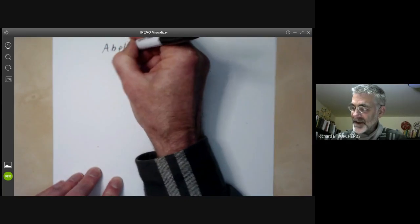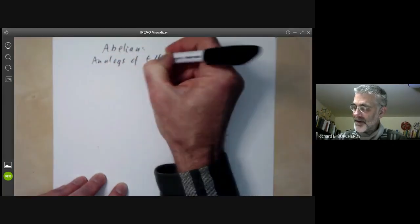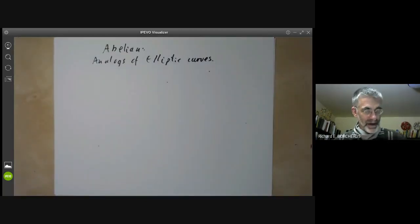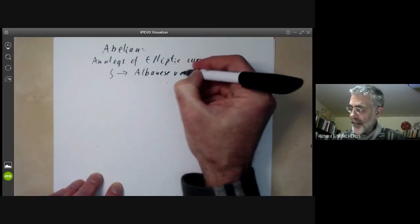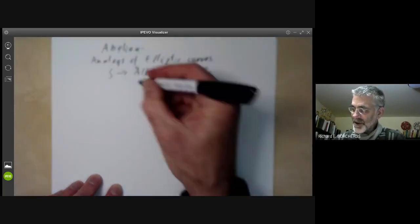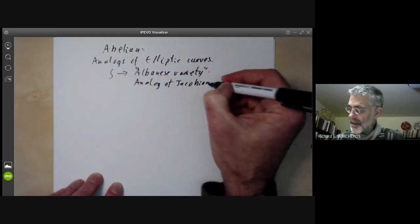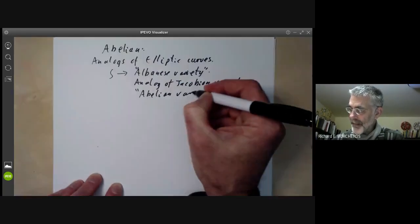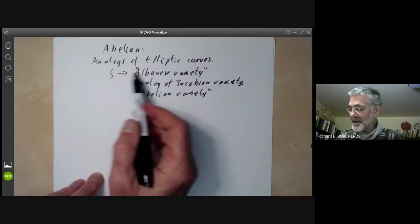What I'm going to do now is just give a few examples of each of these types of surfaces. First of all, we have the abelian surfaces. These are the analogues of elliptic curves. In order to classify them, what you do is you map the surface S to its Albanese variety, which is a high dimensional analog of the Jacobian variety for curves.